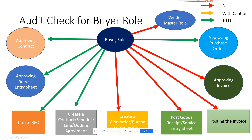We are going to cover the buyer role, which is very important. A buyer is a person who creates a purchase order to buy something from a vendor. A buyer cannot create a vendor — that is a no. A buyer can create a PO and can approve a purchase order as part of the buying process.